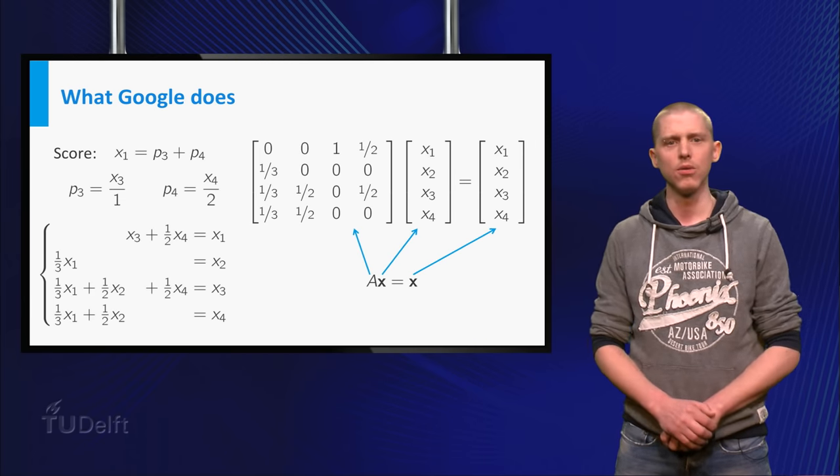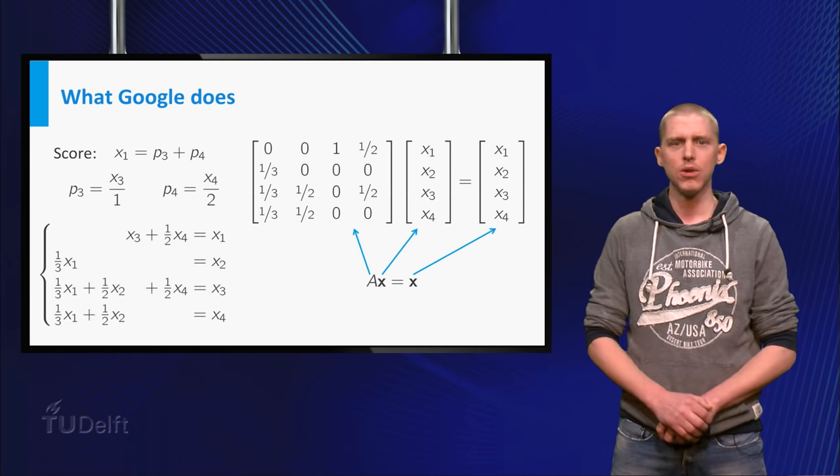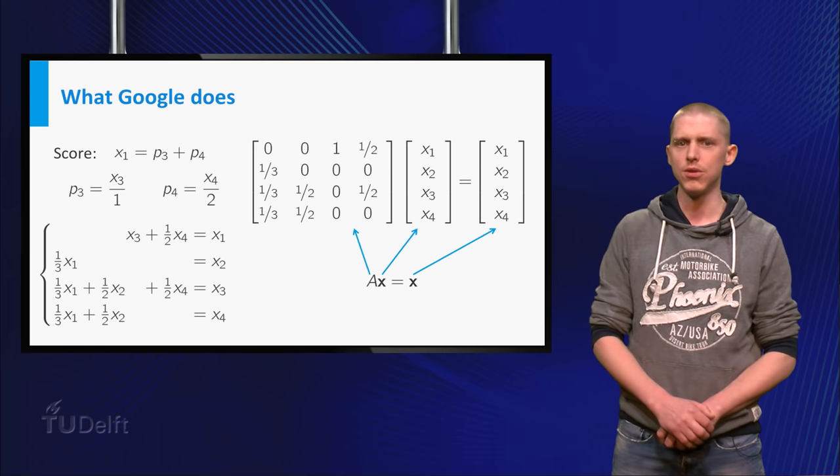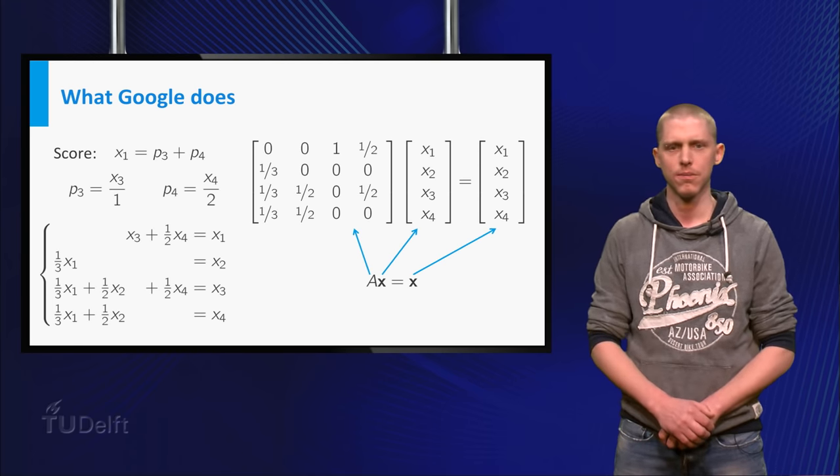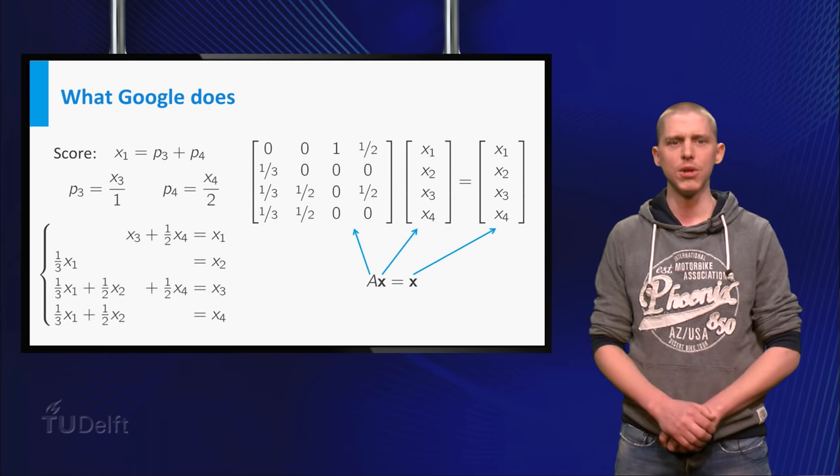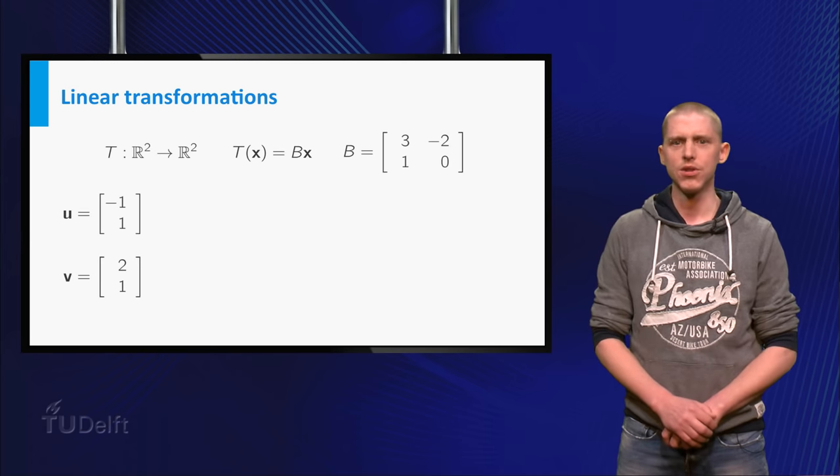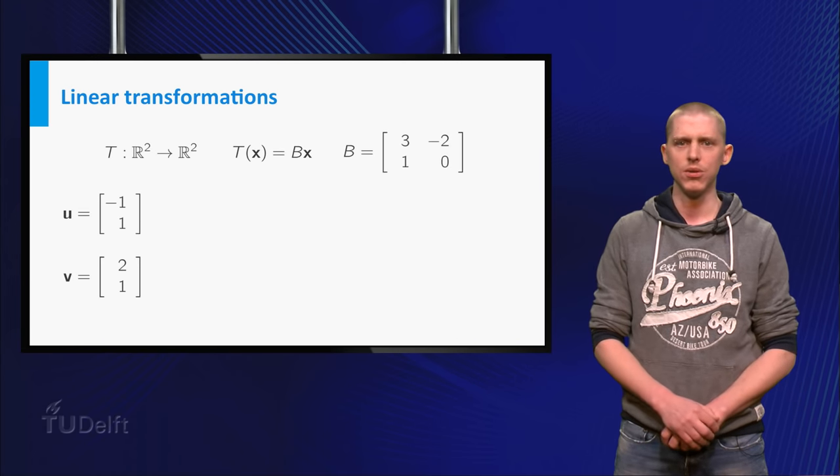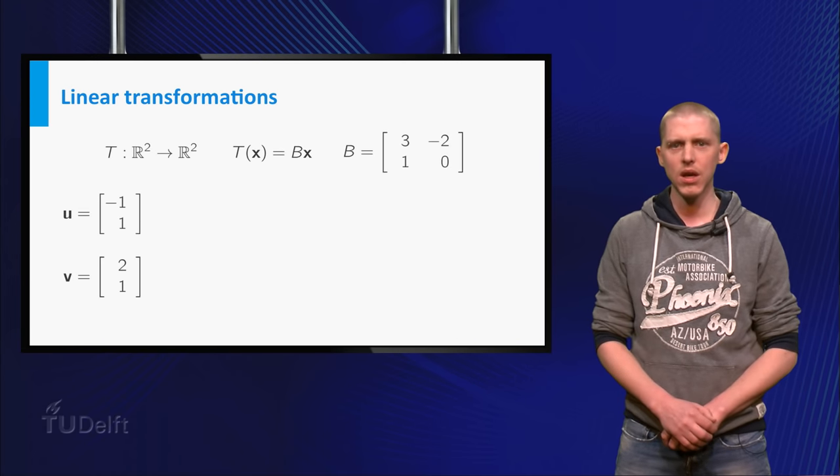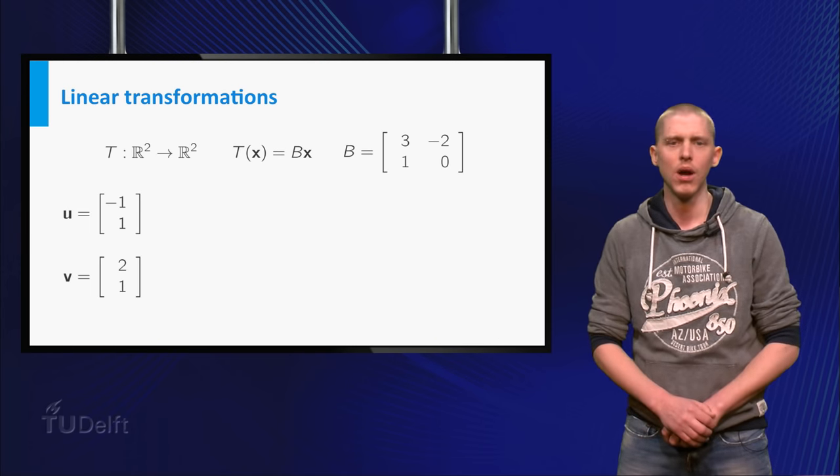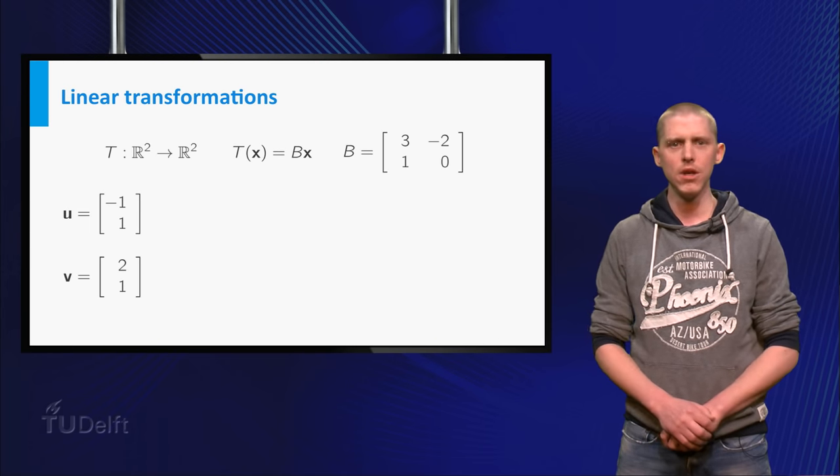Today we are going to focus on eigenvectors, but using matrices of the type Google uses are of course not the only type of matrices. So let us start with a 2 by 2 matrix. Consider the linear transformation T from R2 to R2 with standard matrix B and the two vectors U equals minus 1, 1 and V equals 2, 1.